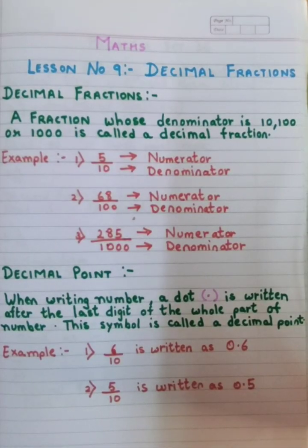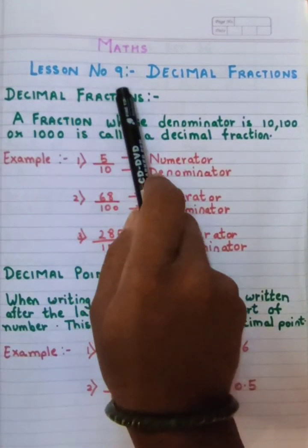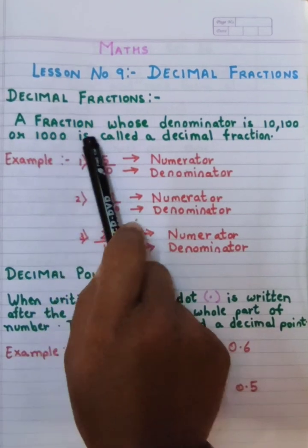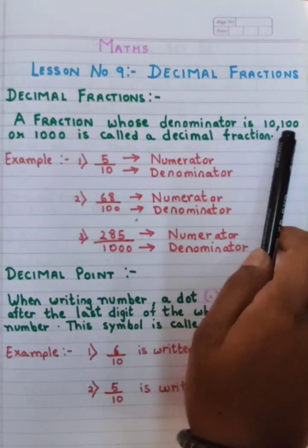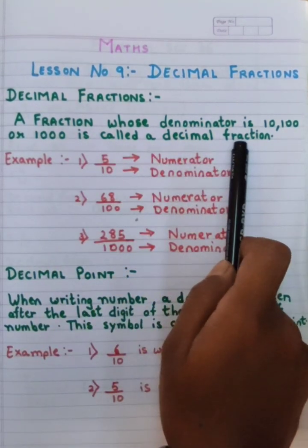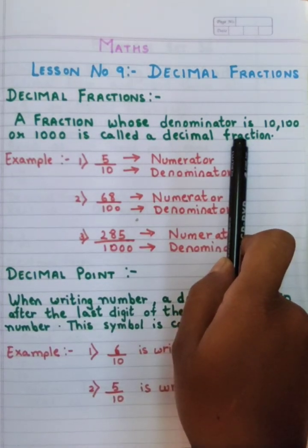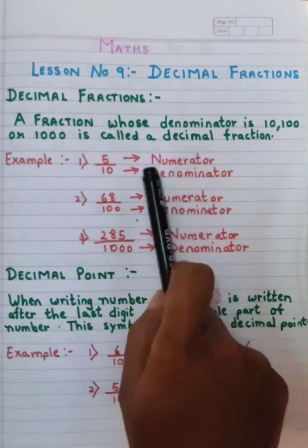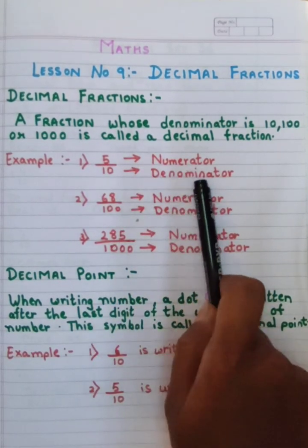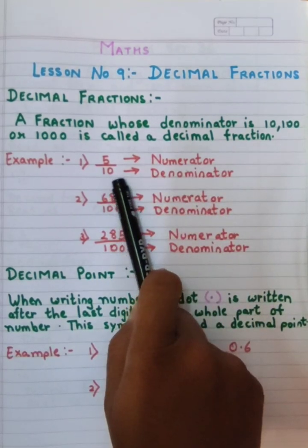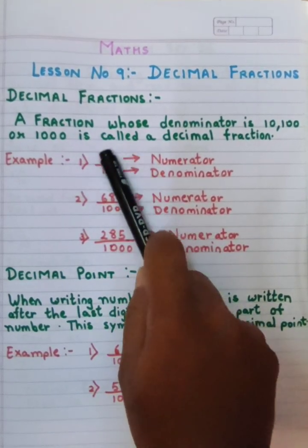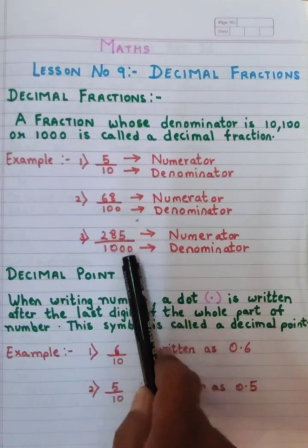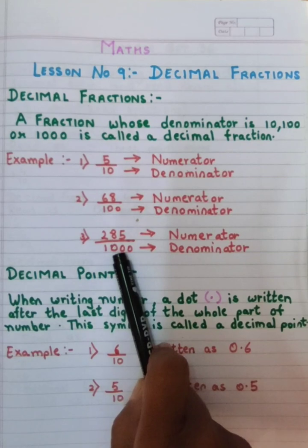Today in maths we are going to start lesson number 9, Decimal Fractions. Now we will understand what is a decimal fraction. A fraction whose denominator is 10, 100, or 1000 is called a decimal fraction. But before that, we will understand what is a fraction — a fraction where there is a numerator and a denominator. The numerator means the top number in a fraction and the denominator means the bottom number. When in the place of the denominator we have 10, 100, or 1000, such a fraction is called a decimal fraction.